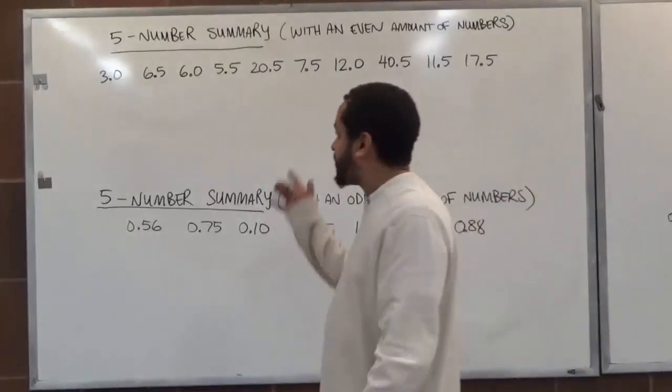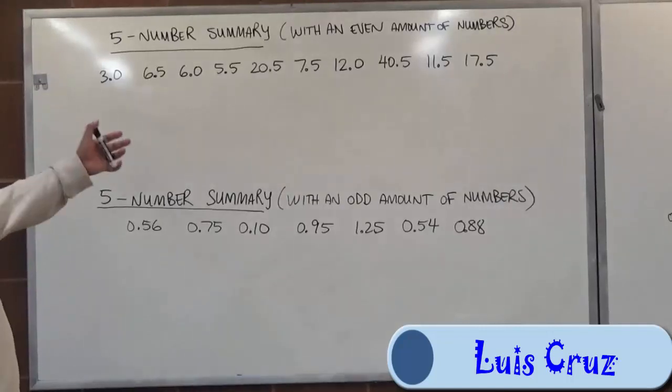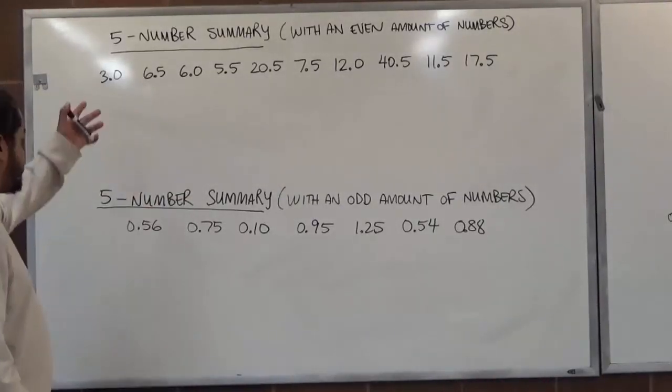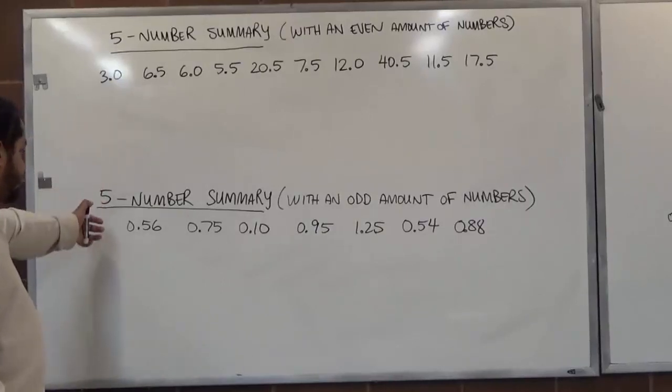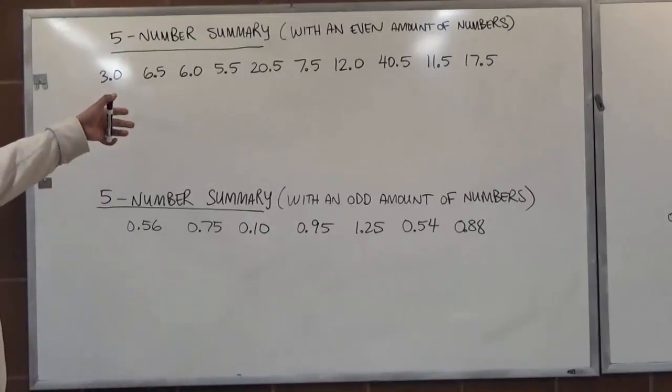Welcome to HelpYourMath.com. In today's video, we're going to be getting a five-number summary. Now, here we have two different data sets. One has an even amount of decimals, and the other one has an odd number of decimal numbers. Now, it doesn't really matter if you have whole numbers or decimal values. We treat them all the same.